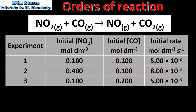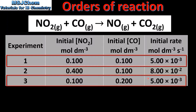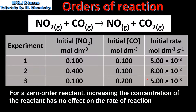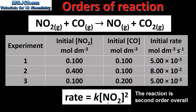Next we look at the carbon monoxide. If we compare experiments 1 and 3 we can see that the concentration of carbon monoxide has doubled, while the concentration of nitrogen dioxide has remained constant. If we compare the initial rate of reaction for experiments 1 and 3 we can see that it has not changed. So changing the concentration of carbon monoxide has no effect on the rate of reaction — therefore the reaction is zero order with respect to carbon monoxide. From this data the reaction is second order with respect to nitrogen dioxide and zero order with respect to carbon monoxide. Note that carbon monoxide does not appear in the rate expression.